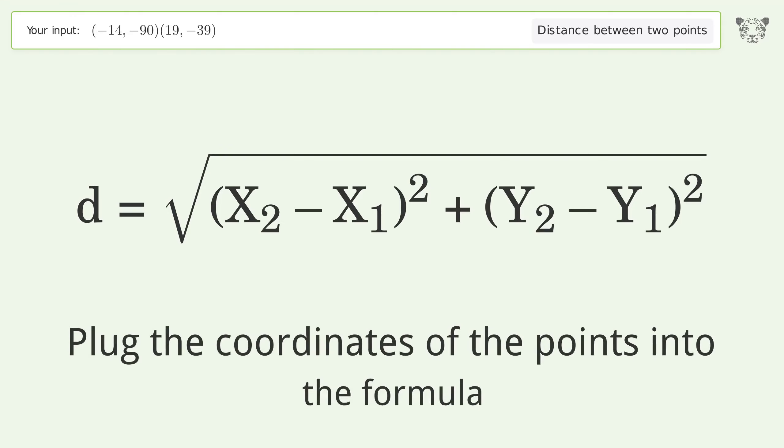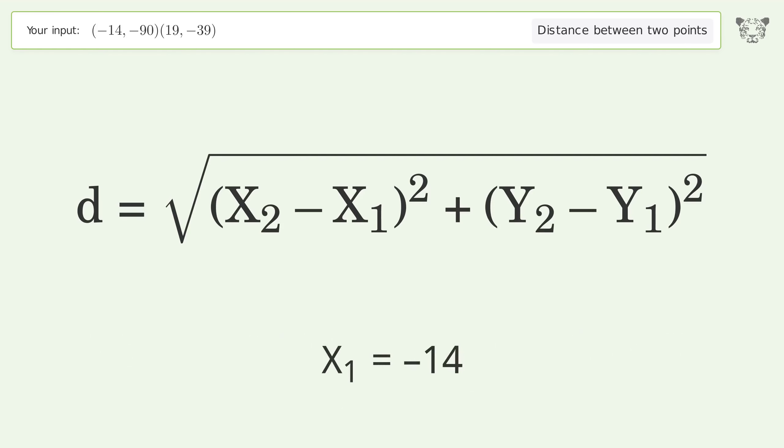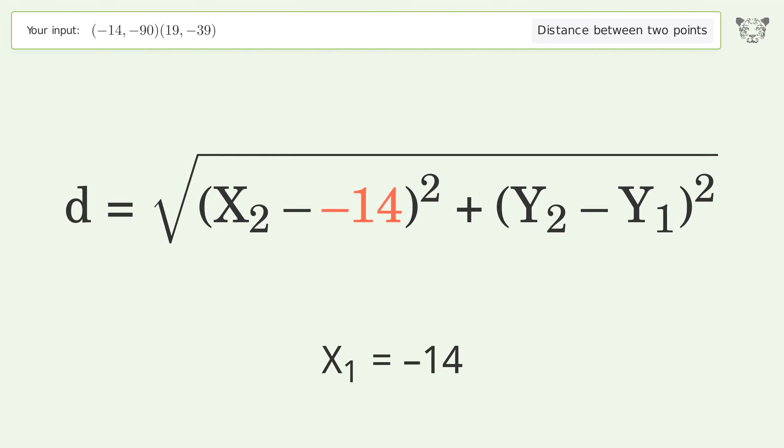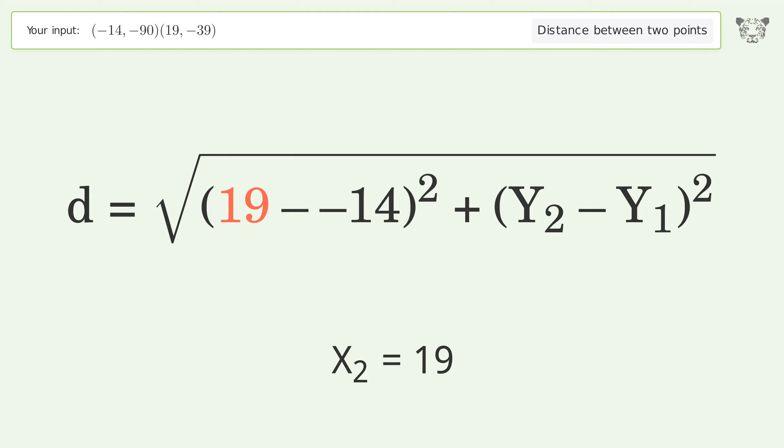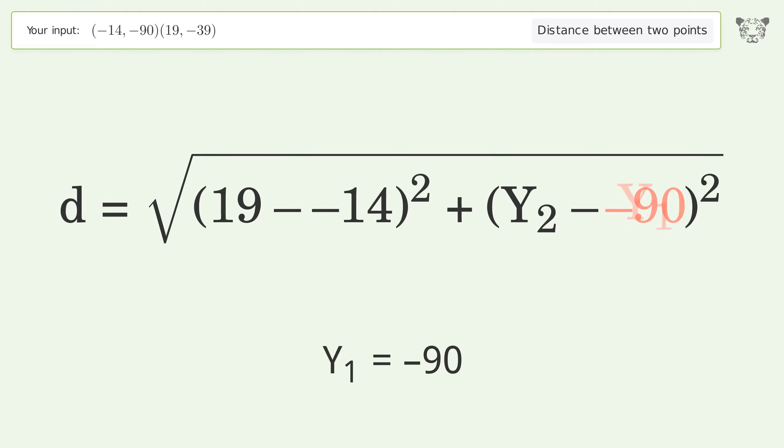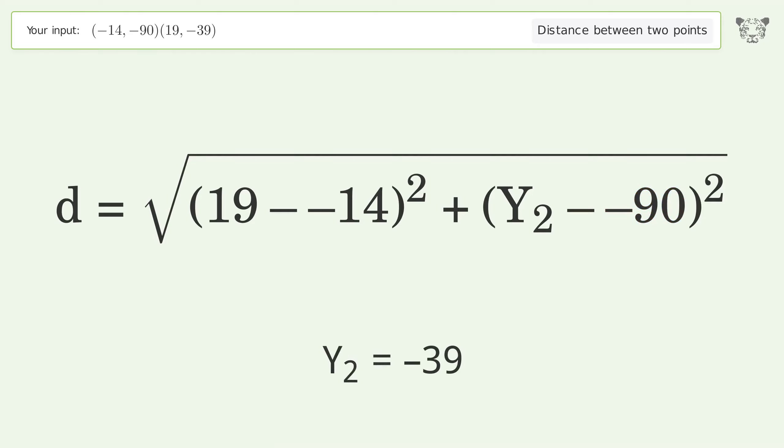Plug the coordinates of the points into the formula. x1 equals negative 14, x2 equals 19, y1 equals negative 90, y2 equals negative 39.